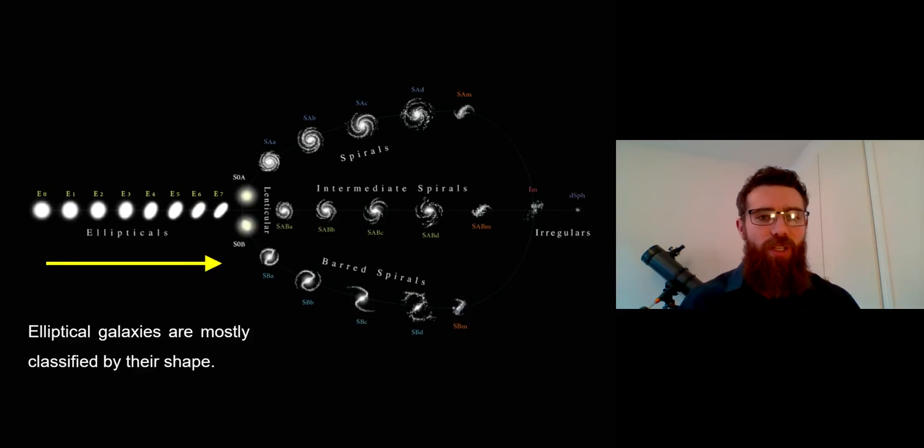Now the ellipticals, which sit on the left-hand side of this diagram, they're mostly classified by their shape. So they can go from circular to more of like a cigar shape, and depending on where they sit on that scale, they'll be given some kind of number. And that's pretty much the main classification for them. That's how we give ellipticals a number or a type, just purely on their shape. But that could relate to how we're looking at them, the orientation as we see them and look out to space.